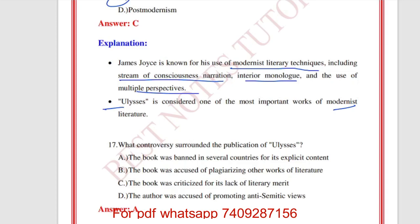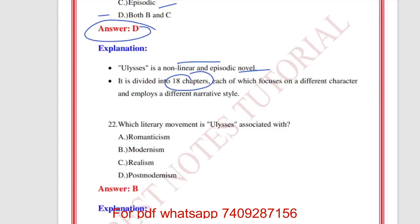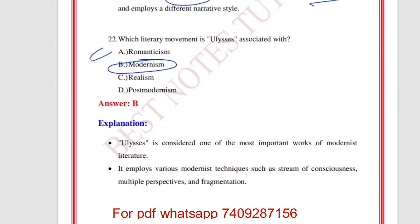What is the narrative structure of Ulysses? The answer is D — both C and B — it is non-linear and episodic. There are 18 chapters, or 18 episodes, each of which focuses on a different character and employs a different narrative style.